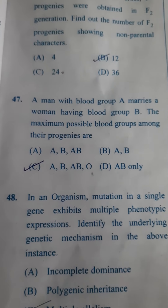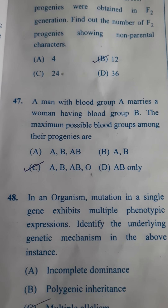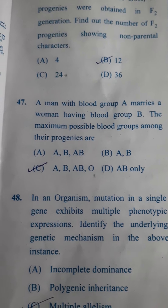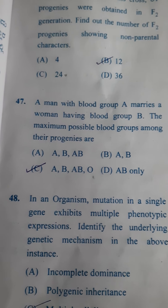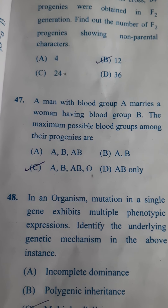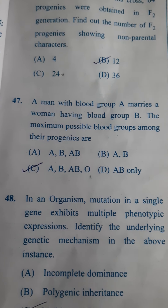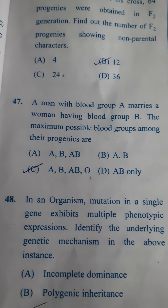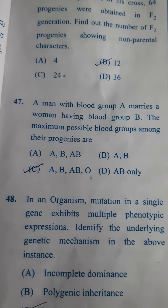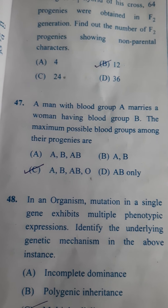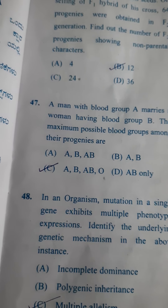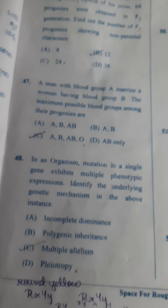Next one: A man with blood group A marries a woman having blood group B. What are the maximum possible blood groups among their progenies? We have to take the man as well as the woman as heterozygous — man as I^A i and woman as I^B i. If we do the cross, all four possibilities arise: A, B, AB, and O. So C is the answer.